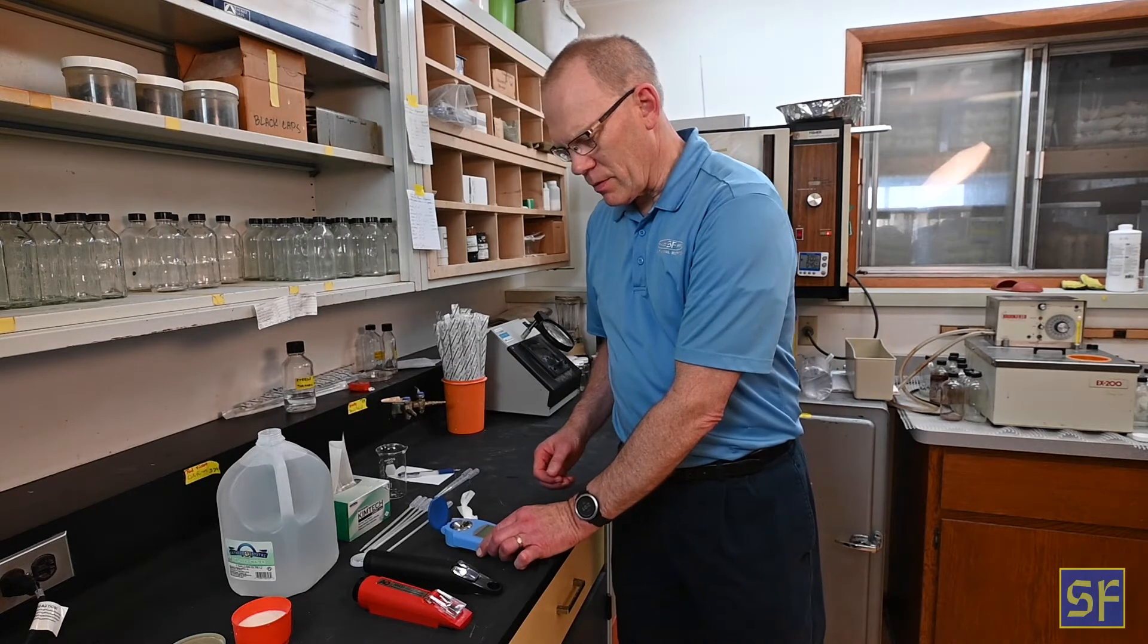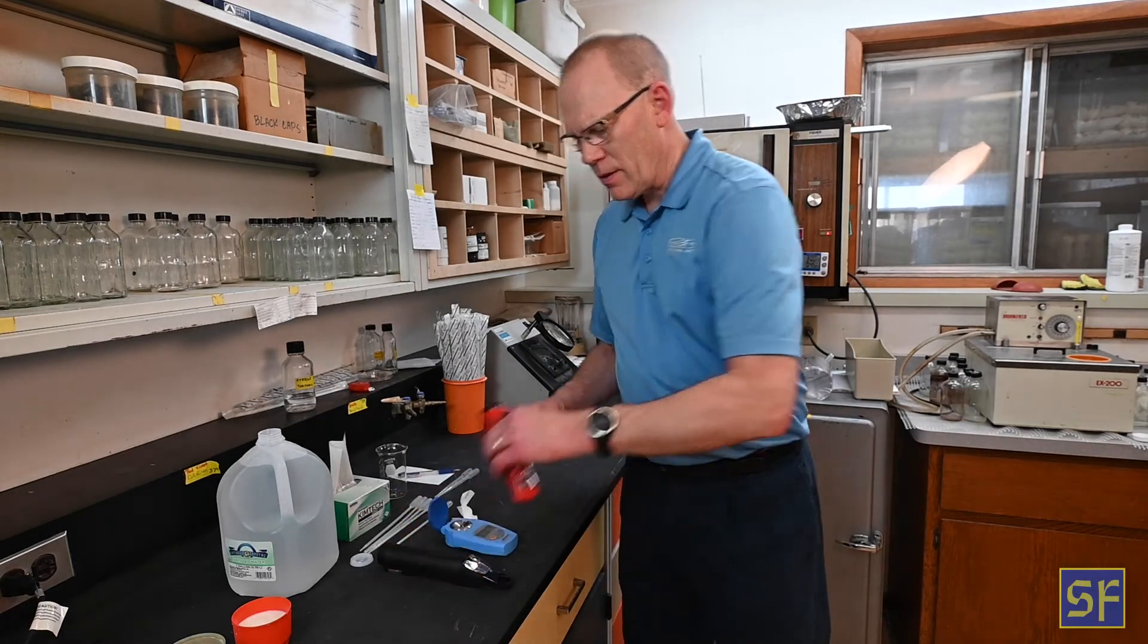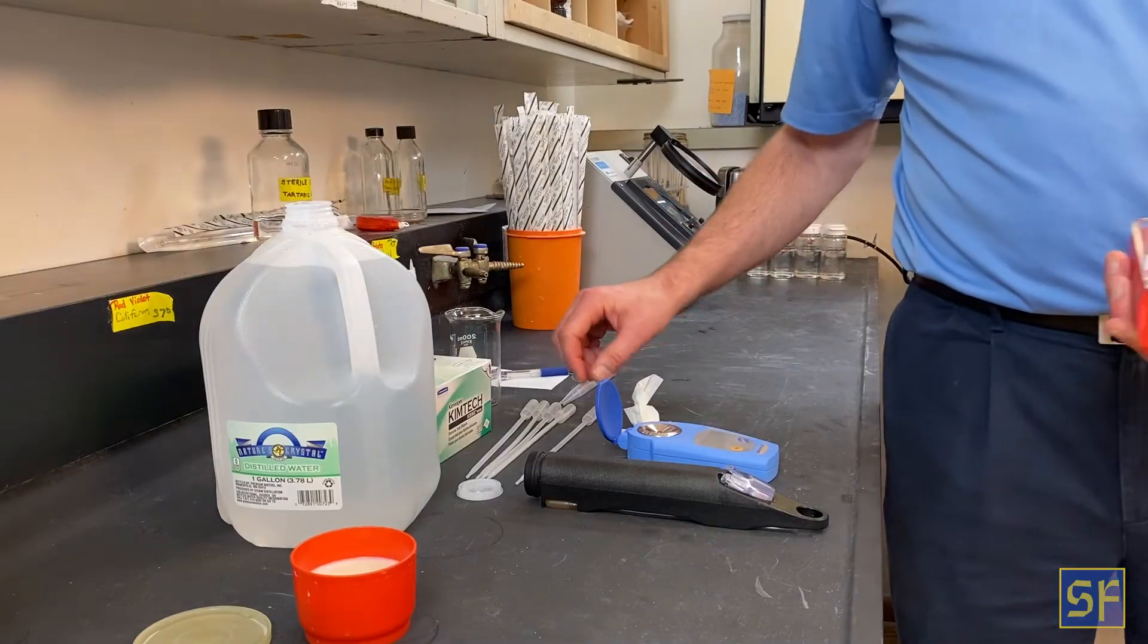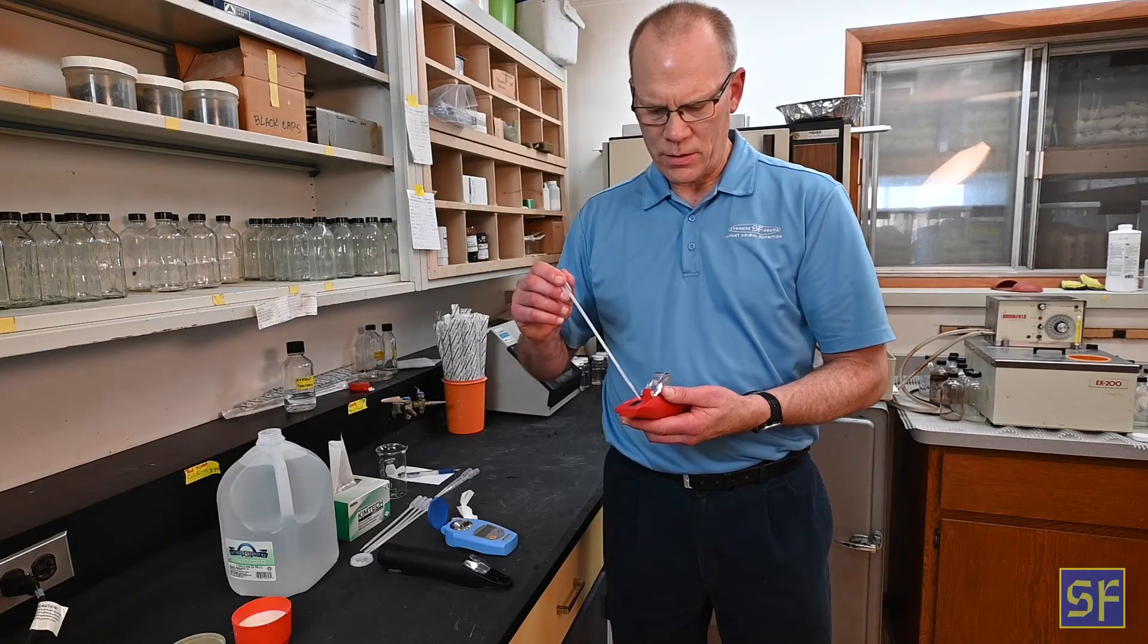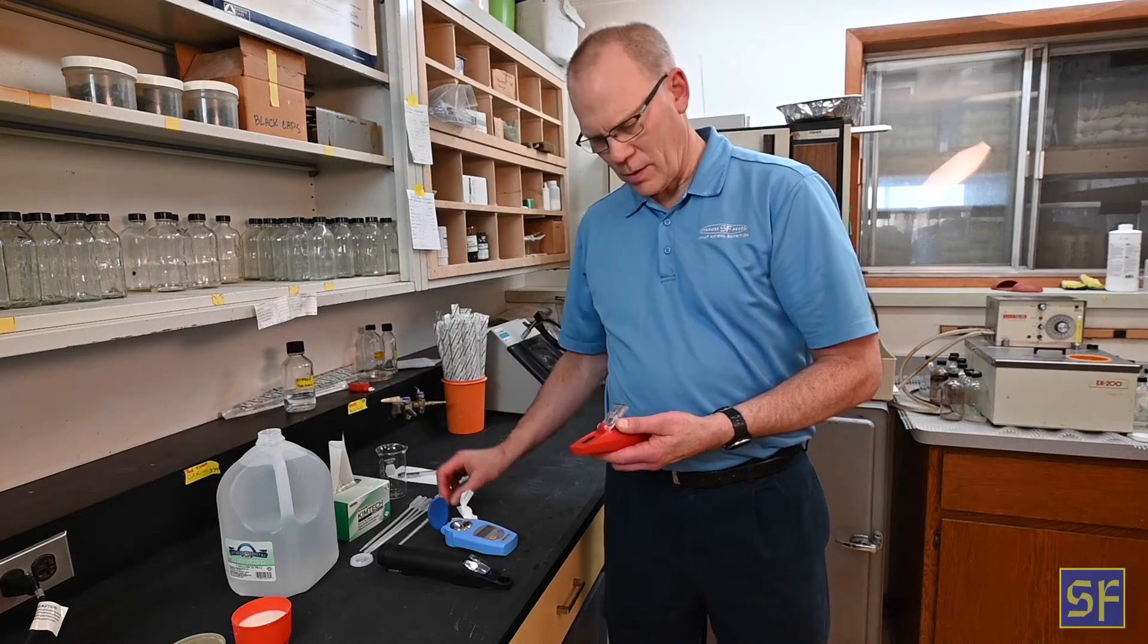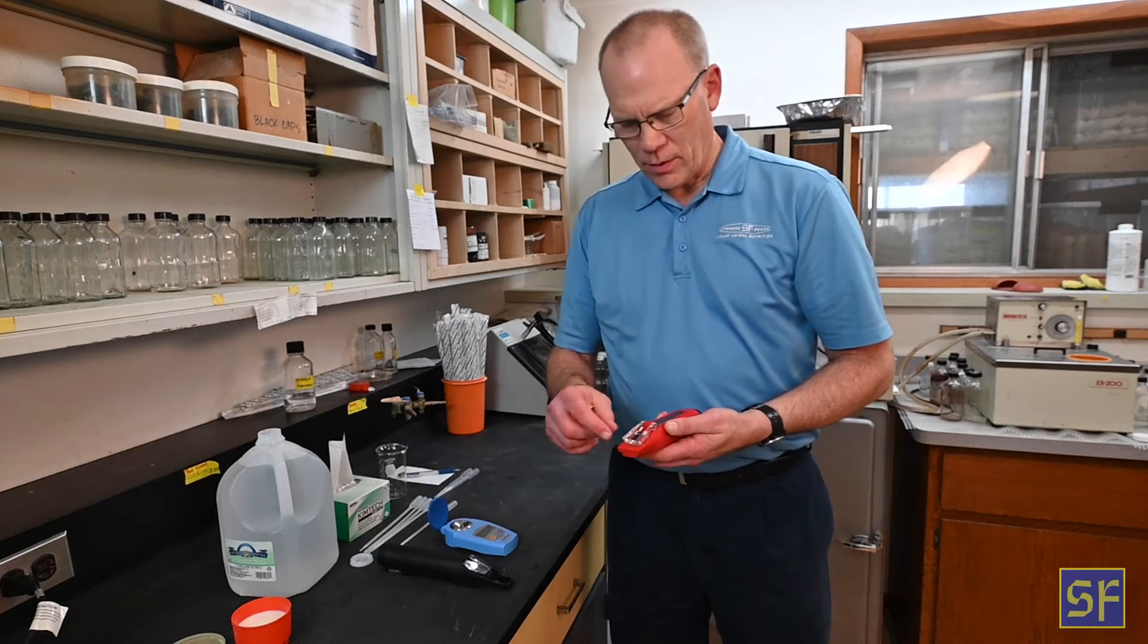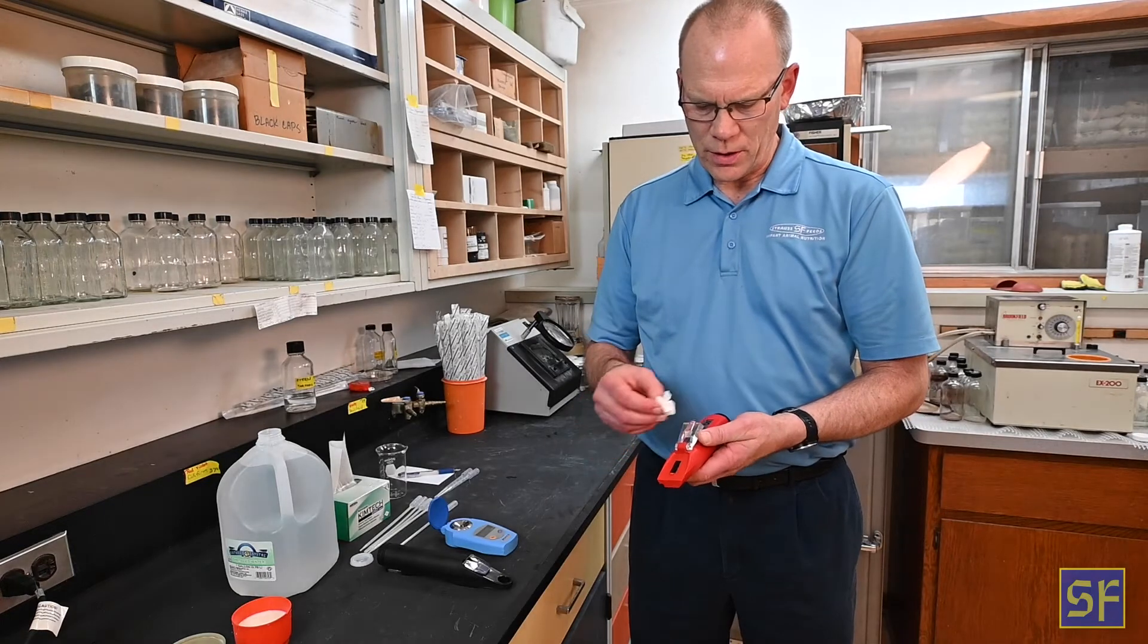On the analog unit, it's a similar practice. You're going to take the analog, slide it up. Again, we want to make sure the lens is clean. Put a little distilled water on the lens. Drop this back down on the cover. Make sure we have full contact with both surfaces here, which is important on this unit.